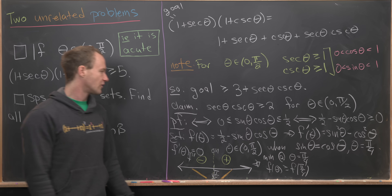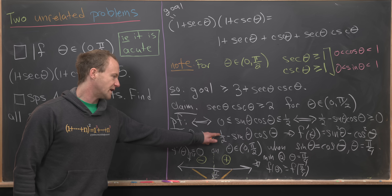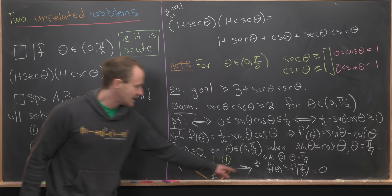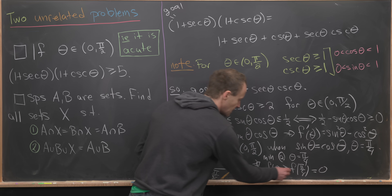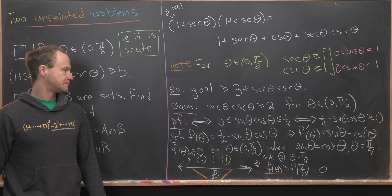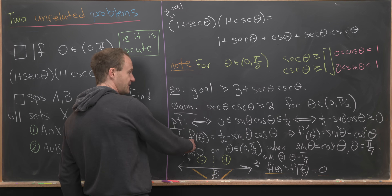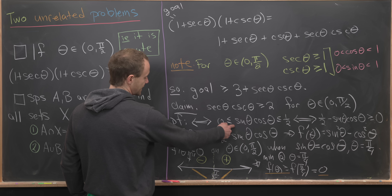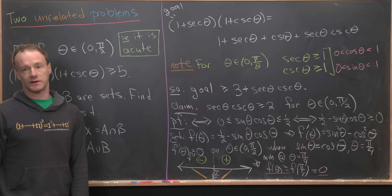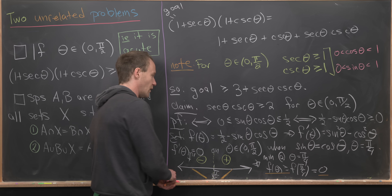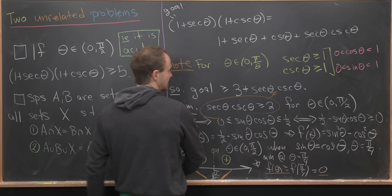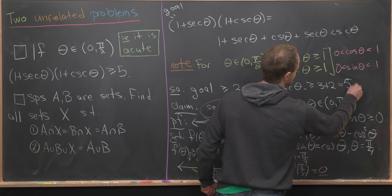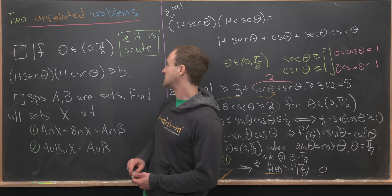Evaluating at the minimum: f(π/4) = 1/2 − (1/√2)(1/√2) = 1/2 − 1/2 = 0. So f(θ) ≥ 0 for all θ in the interval, confirming sin θ cos θ ≤ 1/2, hence sec θ · csc θ ≥ 2. Combining everything: the original expression ≥ 3 + 2 = 5, completing the proof of Problem 1.